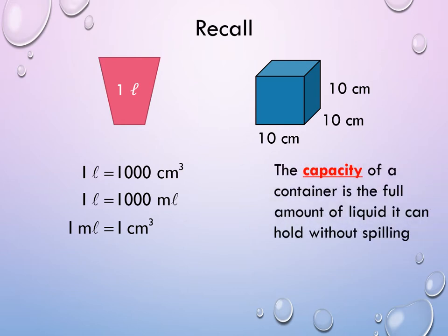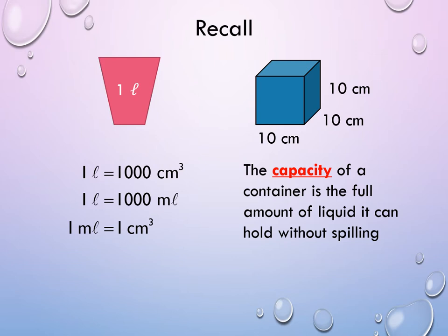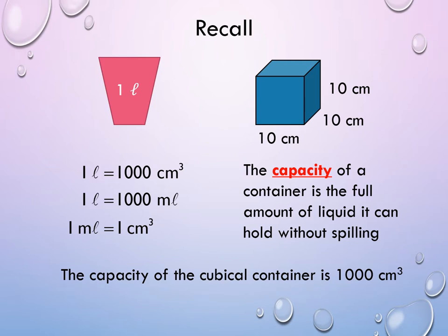Also, recall that the capacity of a container is the full amount of liquid it can hold without spilling. So, for our cubical container here, the capacity of the cubical container is 1,000 cubic centimeters, or 1 liter.